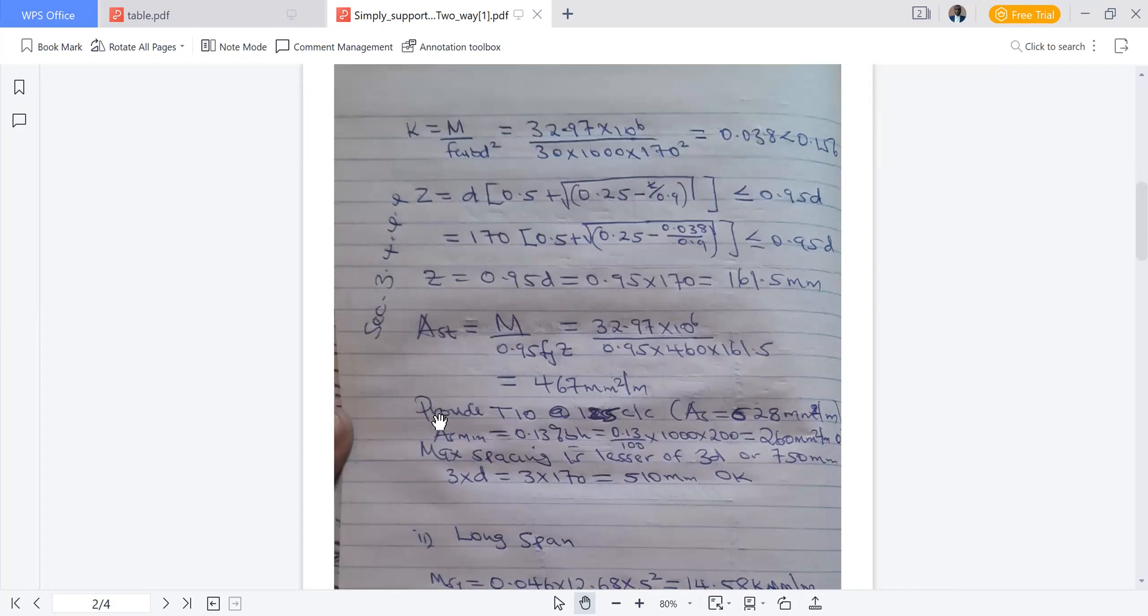Now let's test if this area meets the minimum requirement. Minimum requirement is 0.13 percent bh which is 260 millimeter squared per meter. Our area is 467 millimeter square per meter, so it is okay. We go to the table to look for an area that will satisfy 467 and also satisfy the maximum spacing of 3d, three times effective depth, which is 510.